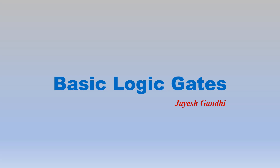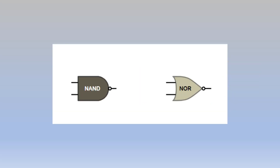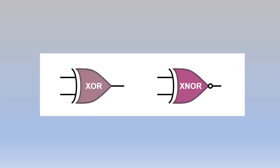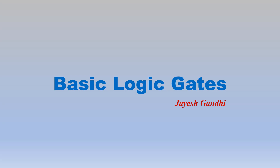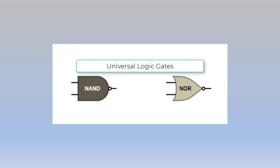So now let us talk about the types of logic gates. There are basically seven types of logic gates: the AND gate, the OR gate, the NOT gate, NAND gate, NOR gate, XOR gate and XNOR gate. Out of these, the first three — AND, OR and NOT — are called the basic logic gates. NAND and NOR are called the universal logic gates.